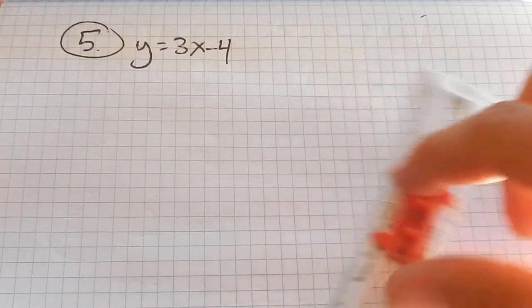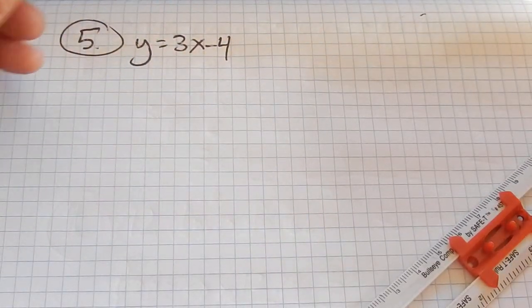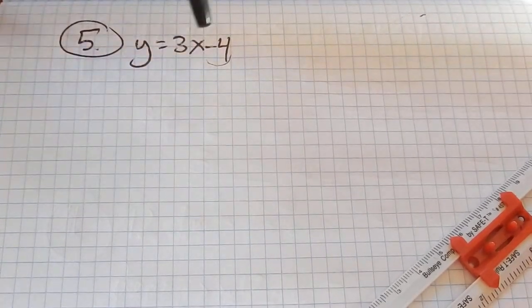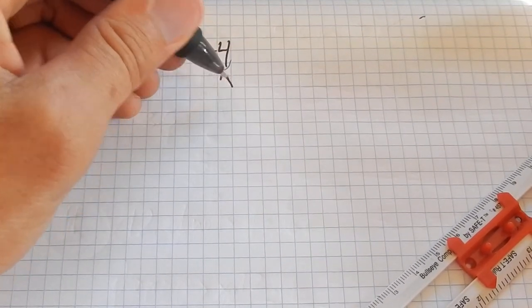So first off, I'm going to look at this. This is in that slope-intercept form where I can read those two pieces right off there. And I know that when x is 0, y is negative 4, right? 3 times 0 is 0. So there's my y-intercept right there.